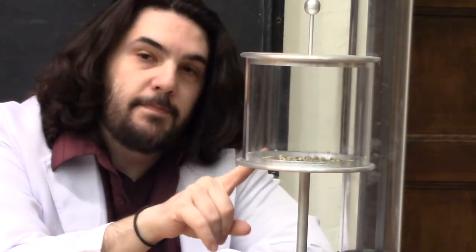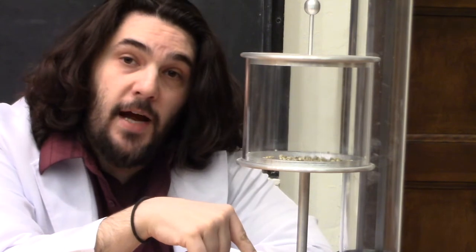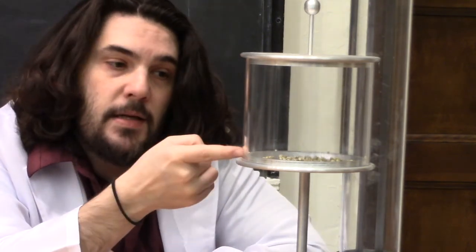This is called Volta's Hailstorm. This bottom plate is connected to the bottom of the Van de Graaff, so it's going to be negatively charged. The top plate is connected to the top, and what's going to happen is these pebbles are going to be attracted to the top, gain that charge, be attracted to the bottom, deposit that charge, and they'll keep shooting back and forth. This is another demo in the same vein as Franklin's Storm Detector.